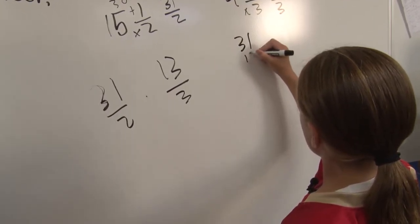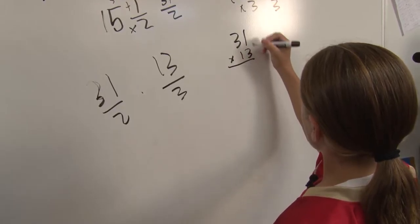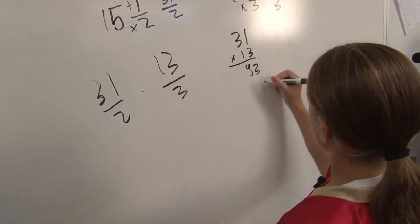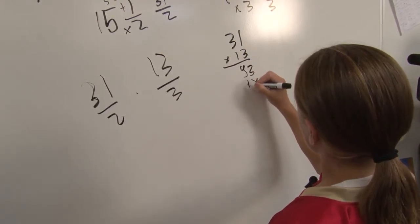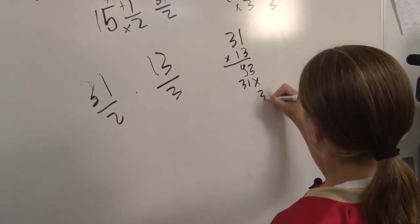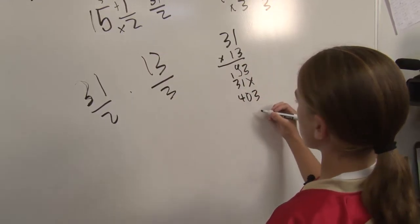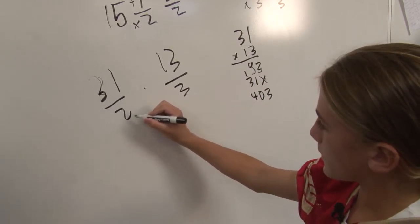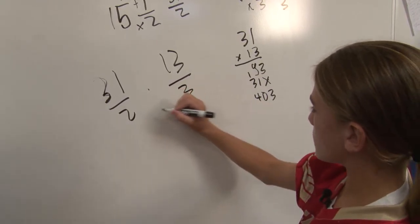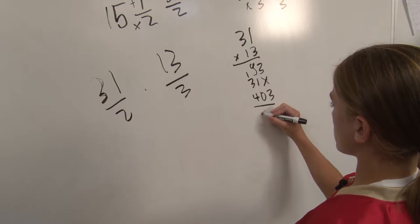Okay. So 31 times 13, and then multiply the denominator, 2 times 3 would be 6, so 403 over 6.